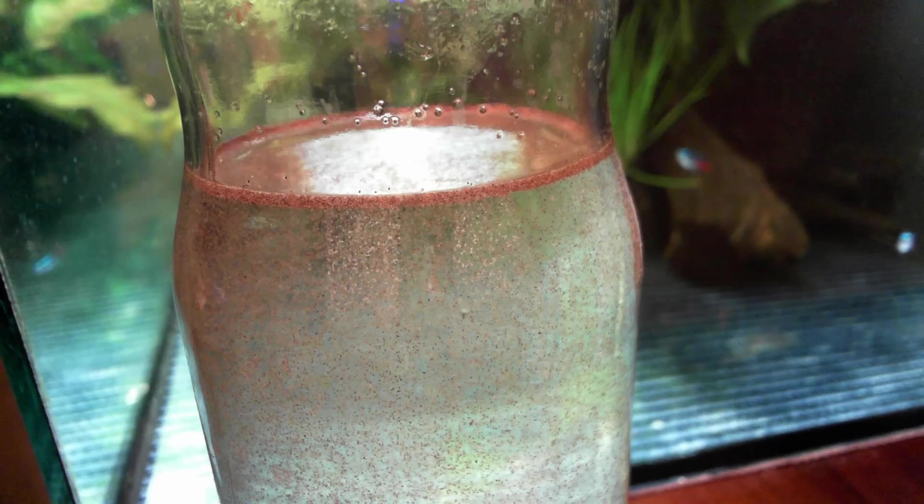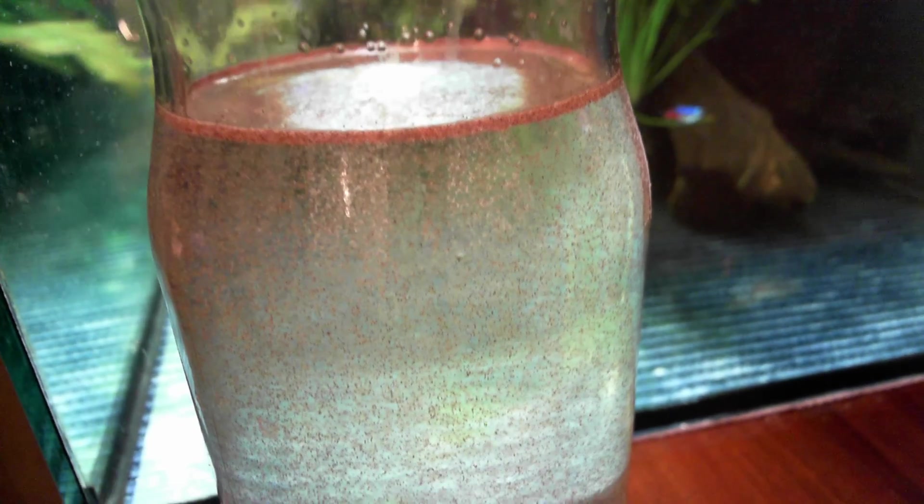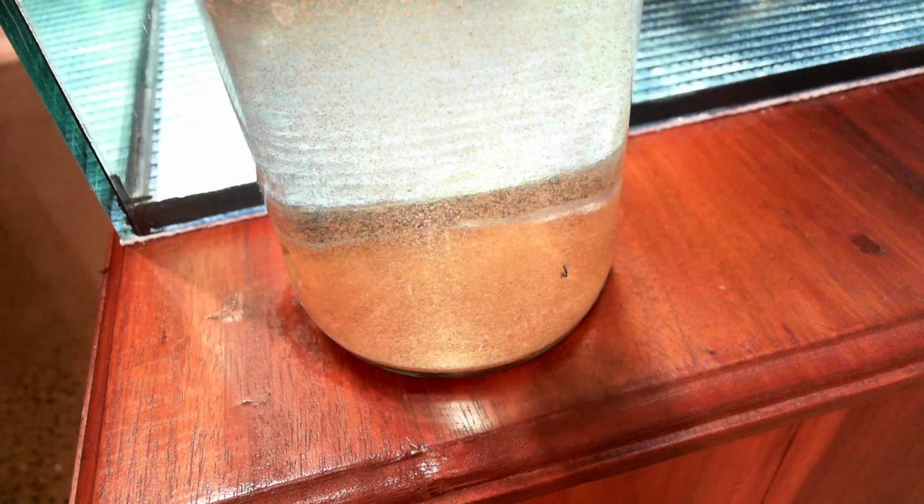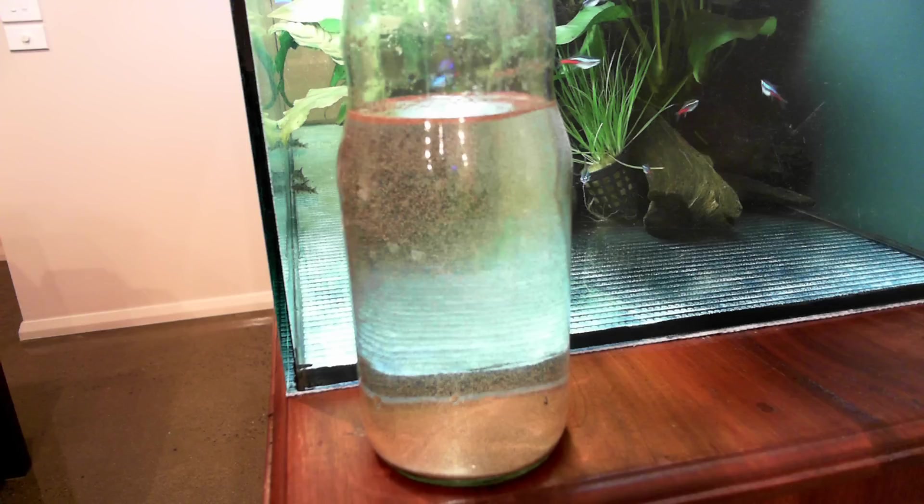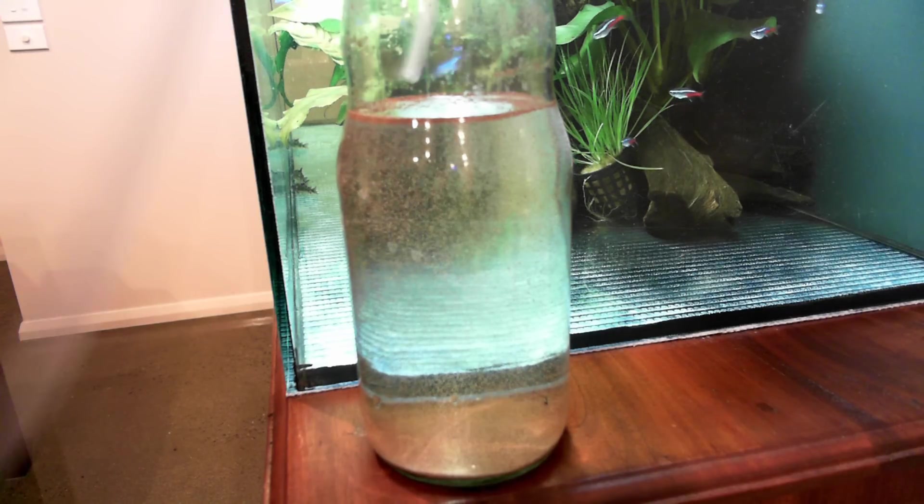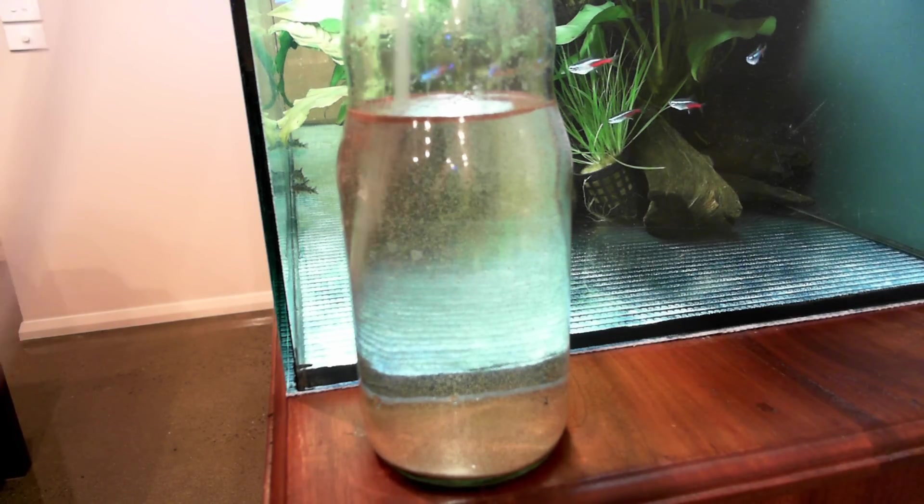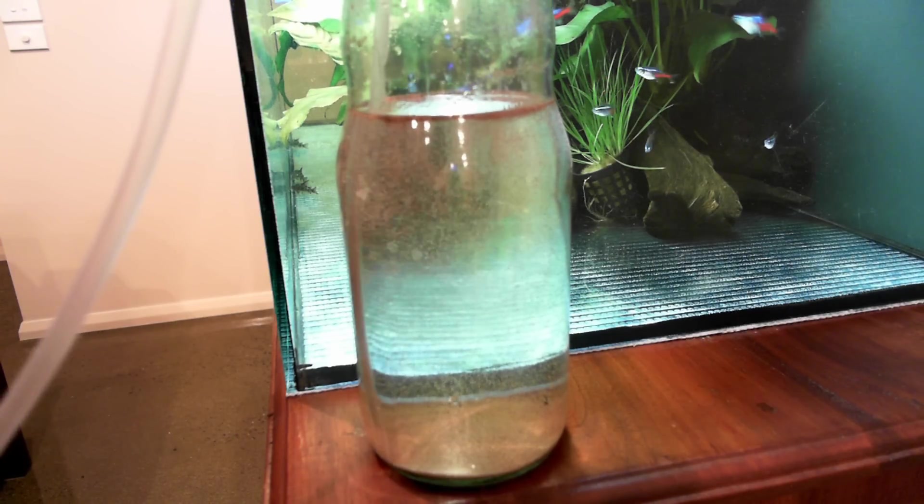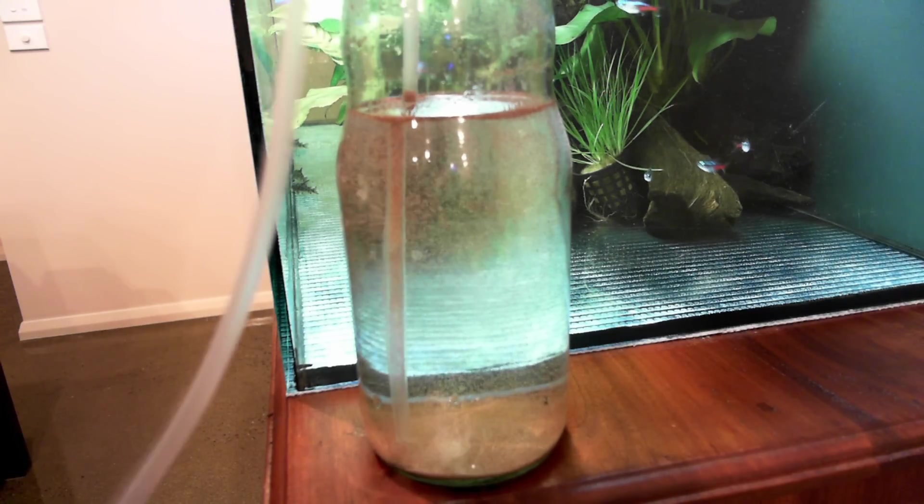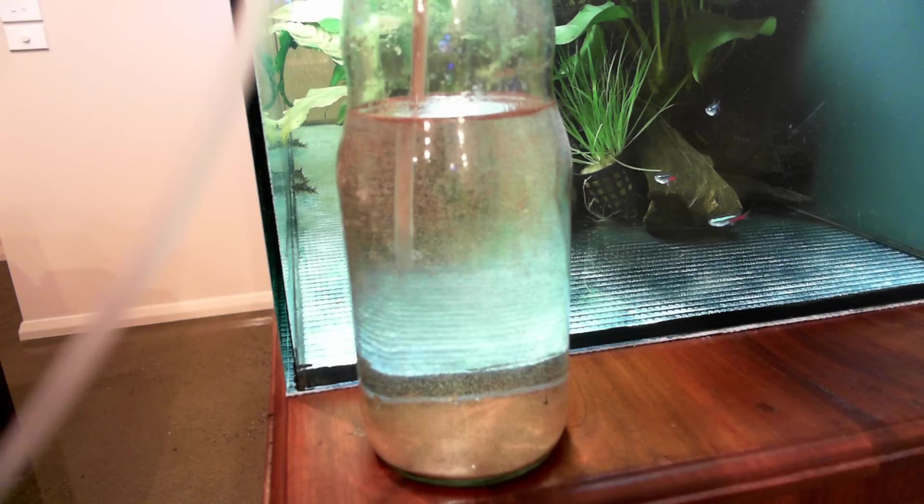24 hours later, we have our egg casings up the top and we have our live brine shrimp down at the bottom. You can see them moving around in there. That's essentially where we're going to harvest from. You harvest from the bottom. The pipette turned out to be a little bit too short for our chosen container. We've just got an empty tube here and you just put your thumb on the end, put it in, release your thumb. It just sucks it up nicely.